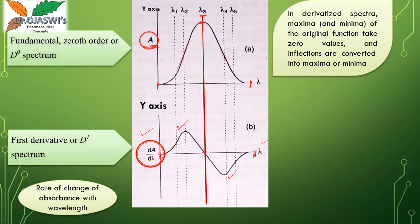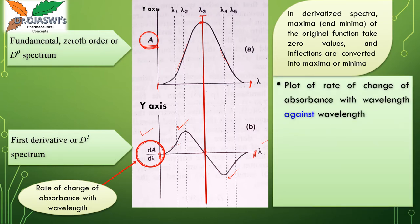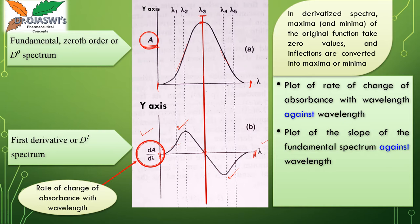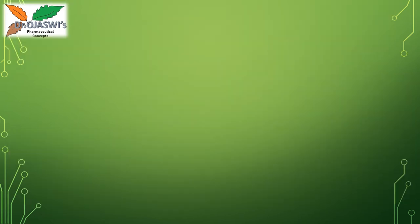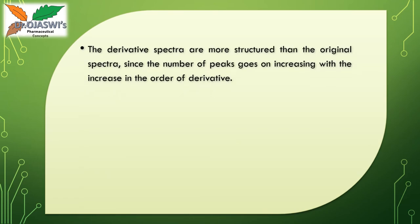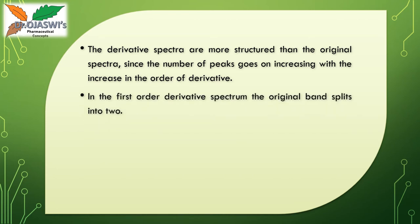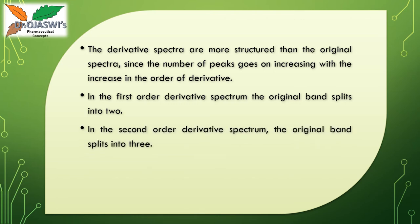In the first derivative spectrum, the rate of change of absorbance with wavelength is plotted on the y-axis — it is a plot of dA/dλ against λ, or the slope of the fundamental spectrum against wavelength. The derivative spectra are more structured than the original spectra since the number of peaks increases with the order of derivative. In the first-order derivative spectrum, the original band splits into two; in the second-order, it splits into three.